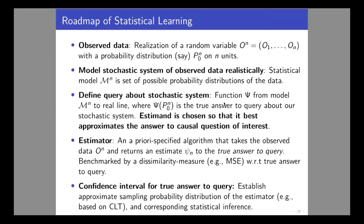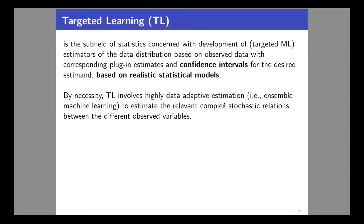Carrying out this roadmap where the statistical model is truly realistic — only making assumptions such as independence or IID data — is a real challenge. That is why we call this field targeted learning: constructing estimators of the data distribution such that the corresponding plug-in estimates of your target parameter are well-behaved, meaning asymptotically normally distributed so we can get confidence intervals. This necessarily involves machine learning, because you have to data-adaptively learn relations between outcomes, treatments, and covariates.